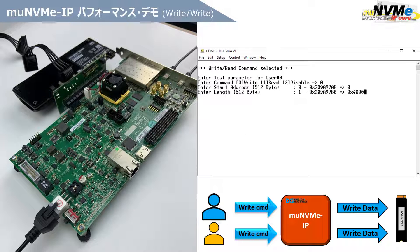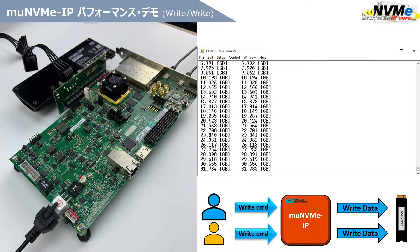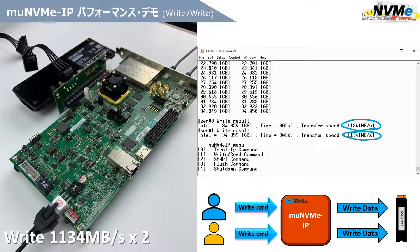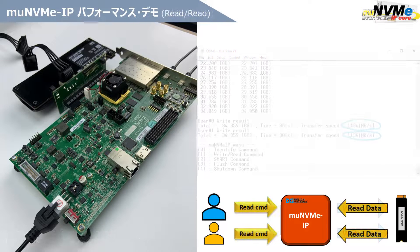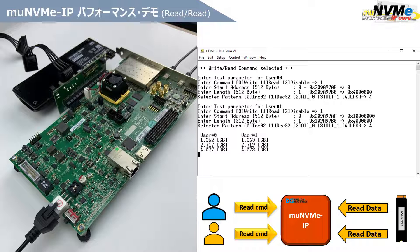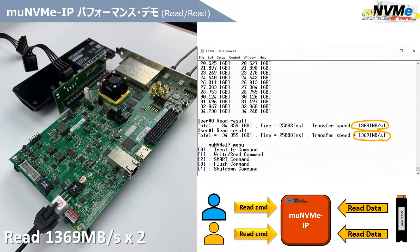For two write accesses from two users at the same time, we can measure 1,134 MB/s per user while two users simultaneously write to the SSD. For two read accesses from two users at the same time, we can measure 1,369 MB/s per user while two users simultaneously read from the SSD.